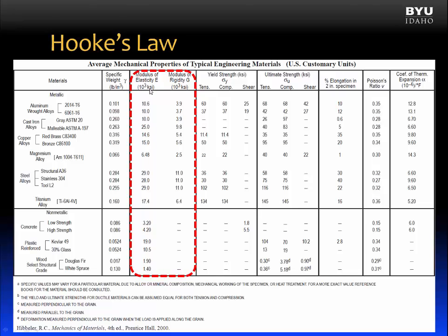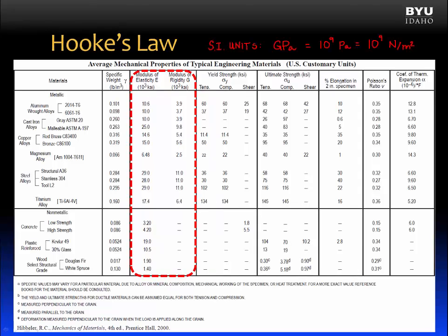Units in US customary units are 10 to the third KSI, which is also 1 million PSI. In SI units, the modulus of elasticity or modulus of rigidity are typically given in gigapascals, which is equivalent to 10 to the ninth pascals, or 10 to the ninth newtons per meter squared.